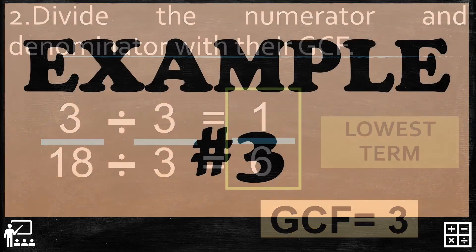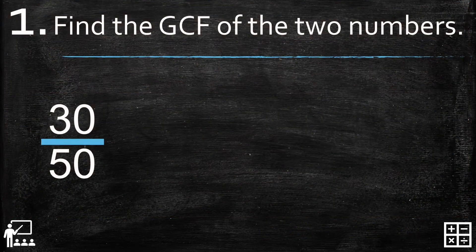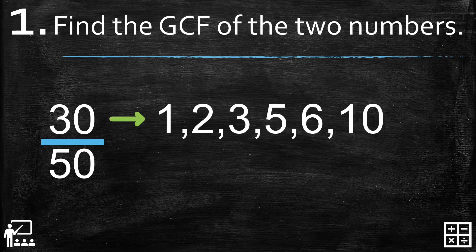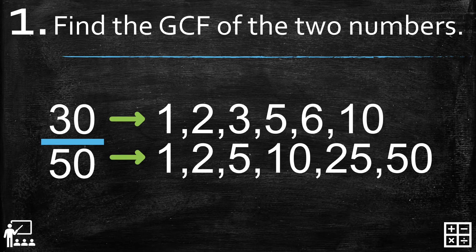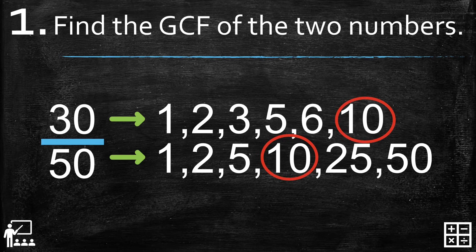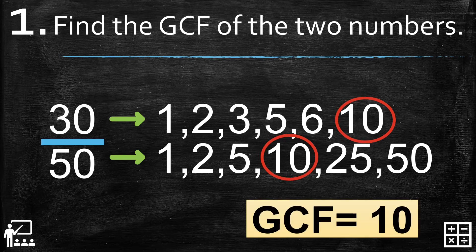Let's try another example. Find the GCF of 30 and 50. The factors of 30 are 1, 2, 3, 5, 6, and 10. The factors of 50 are 1, 2, 5, 10, 25, and 50. Can you guess the greatest common factor of the two numbers? That's right — it's 10. The GCF of 30 and 50 is 10.